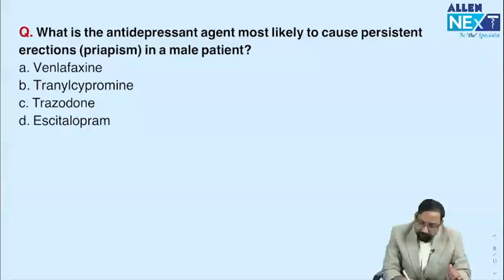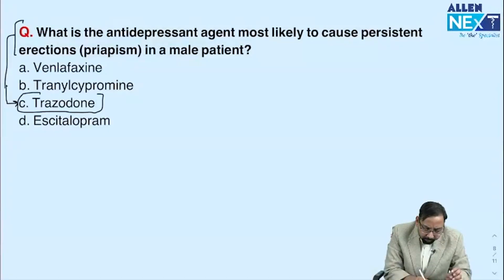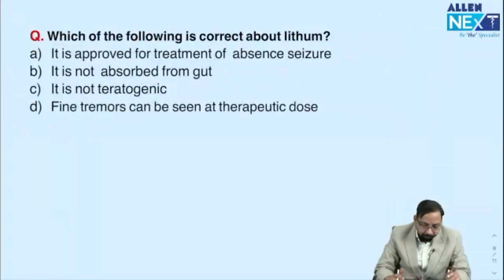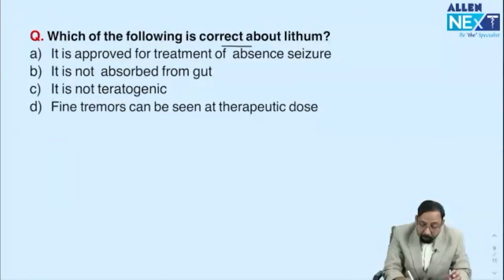Another repeat question from pharmacology or psychiatry: which antidepressant agent most likely causes priapism? The answer is trazodone. No further discussion needed on that. Next topic: which of the following is correct about lithium? Lithium has always been a high-yield topic.